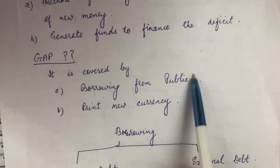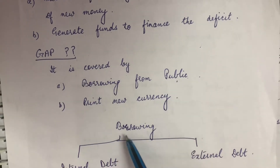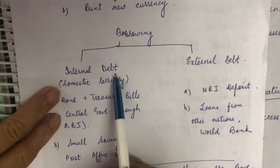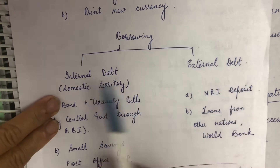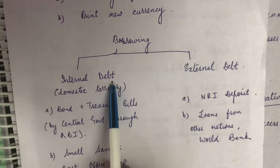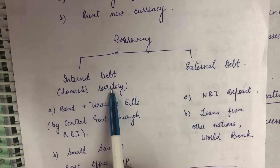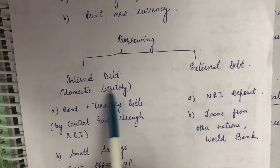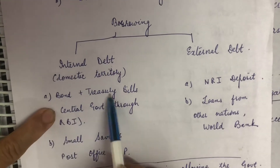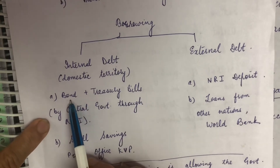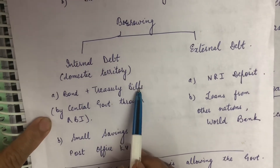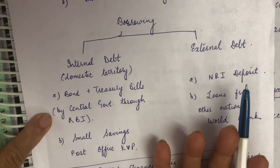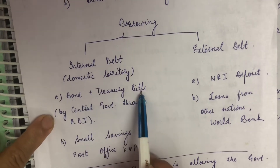When we talk about borrowing from the public to get money, we divide this into two segments: internal debt and external debt. First, internal debt — the government collects money from within its own country, from the domestic territory, within the border. This can be further done through bonds and treasury bills. The government issues bonds and treasury bills to the general public to collect money and fill the deficit. Money is needed, so it is asked from the public through bonds and treasury bills.